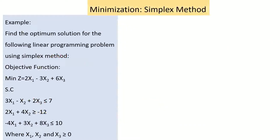Let's work through an example. Find the optimum solution for the following linear programming problem using the Simplex Method. The objective function is: minimize Z equals 2x1 minus 3x2 plus 6x3, subject to the constraints: 3x1 minus x2 plus 2x3 less than or equal to 7; 2x1 plus 4x2 greater than or equal to negative 12; minus 4x1 plus 3x2 plus 8x3 less than or equal to 10; where x1, x2, x3 are all greater than or equal to 0.